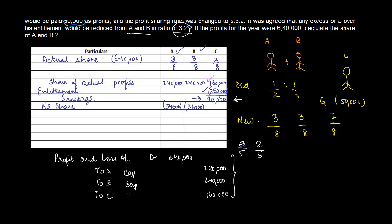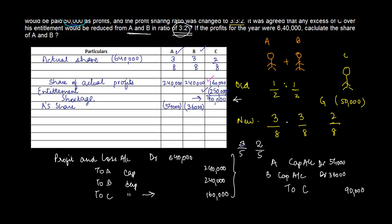Now C is supposed to get 90,000 more, so his capital account gets a credit of 90,000 — because to increase capital you credit it. Who gives this money? A and B. So A's capital account is debited by 54,000 and B's capital account is debited by 36,000. Just remember these two entries — it will otherwise become a little bit confusing.